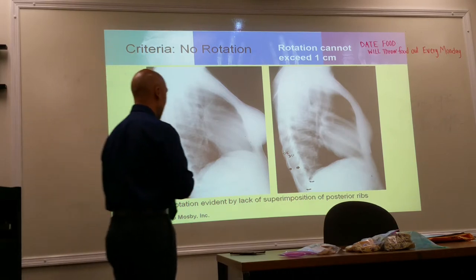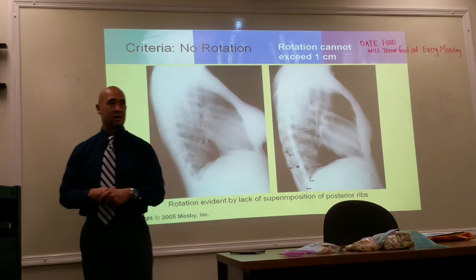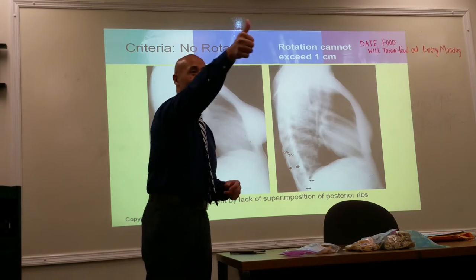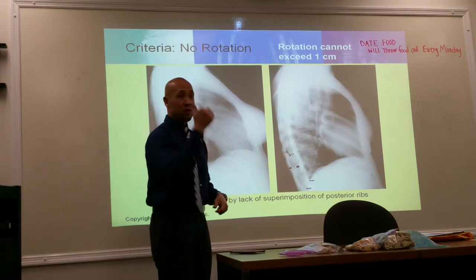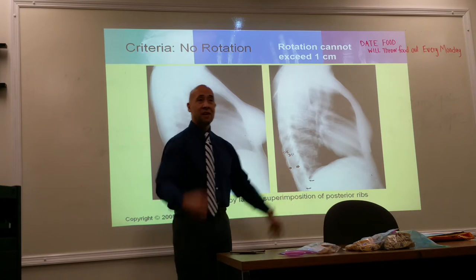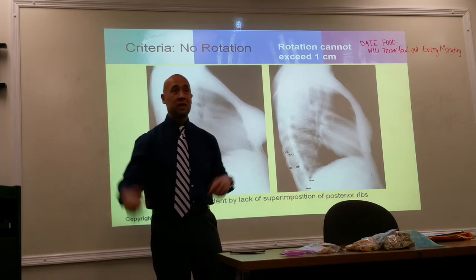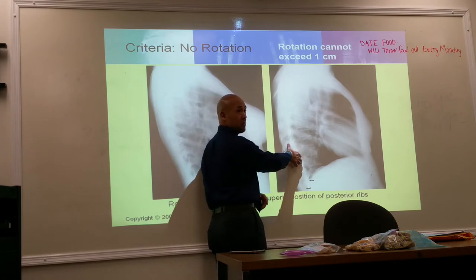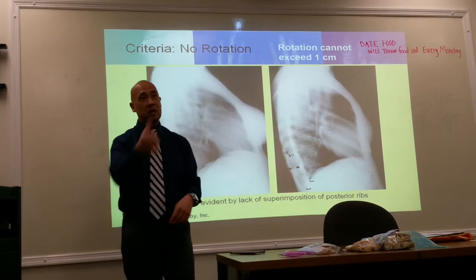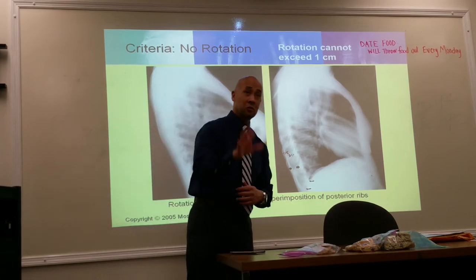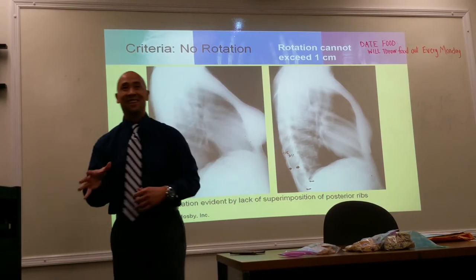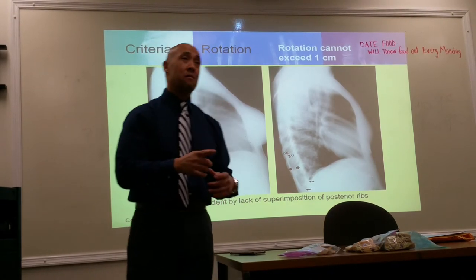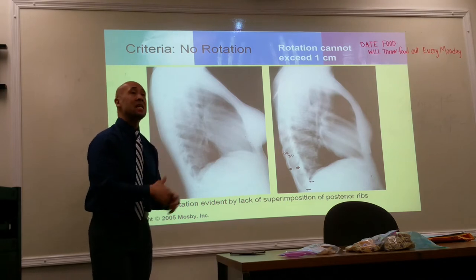How do you determine one centimeter? It's a thumb rule. You place your thumb between the two sets of ribs on the radiograph display screen. If the separation is greater than the width of your thumb, it may need to be repeated. Most thumbs are approximately one centimeter wide.